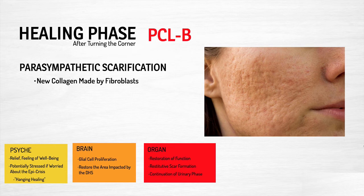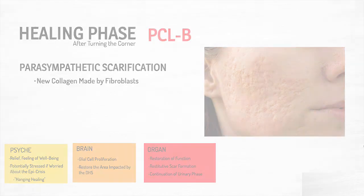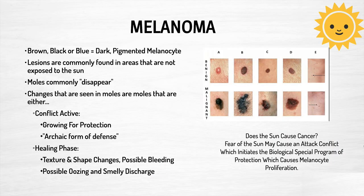That is the entire program of the two phases of a conflict regarding the corium skin. Now let's address some individual issues that come up with the corium skin — for example, a melanoma. A melanoma is a proliferation of the melanocytes, which are the melanin-producing cells within the skin. You can see examples of different moles and how they're different colors.